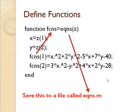So that's how this works. If you have, say, five equations and five unknowns, z would have five elements in it, and there would be five functions here. But it's a straightforward extension.